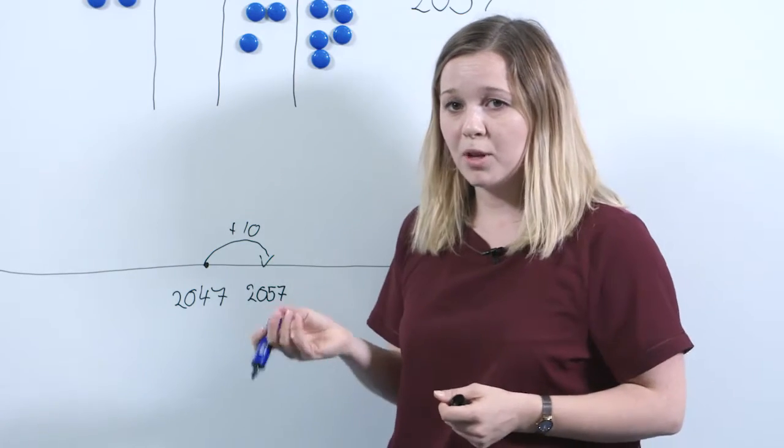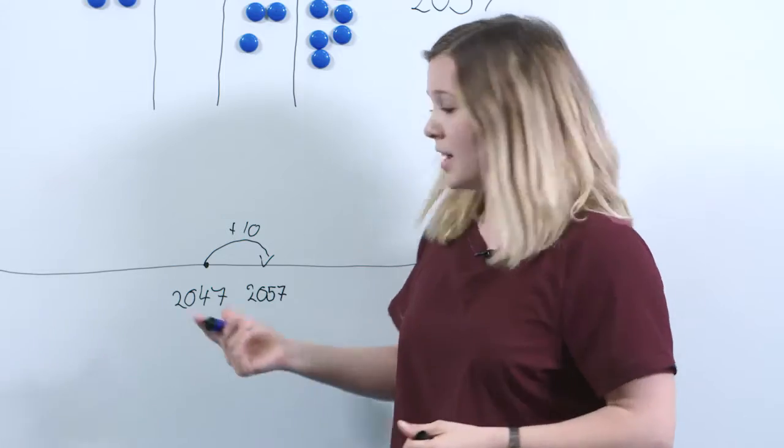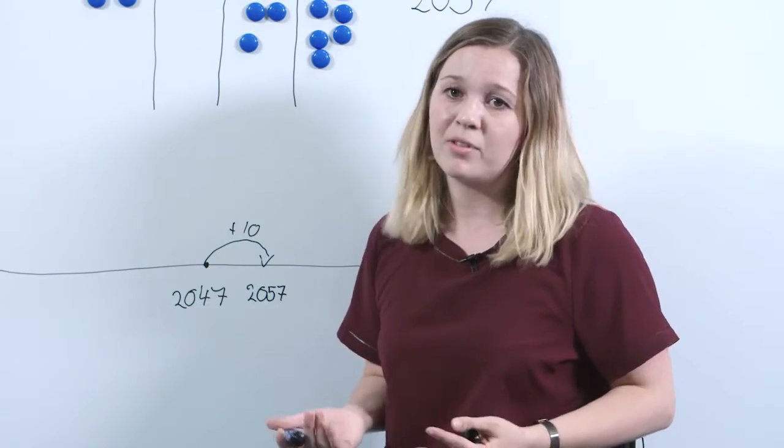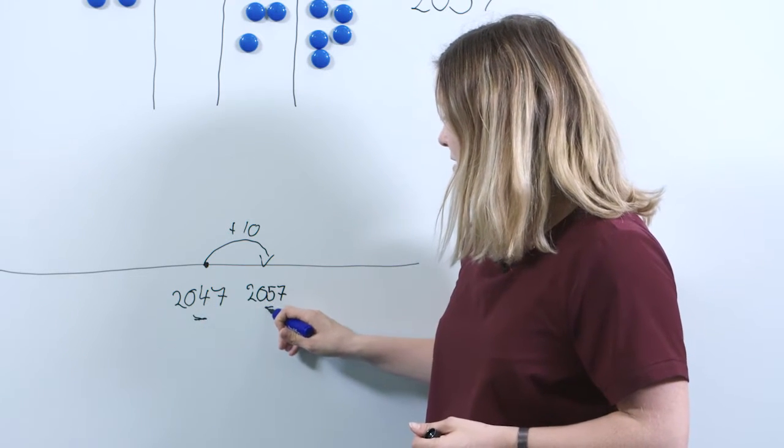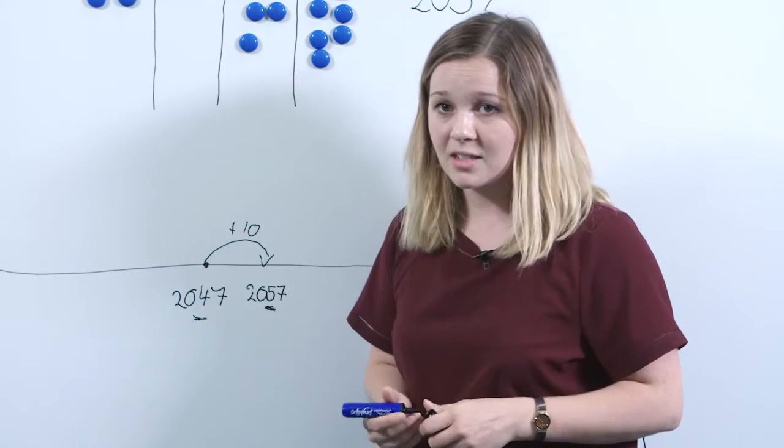A good way to help pupils start to spot patterns is to ask them to look at these numbers and say what has happened to the number. So hopefully they'll see that it's this digit in the tens place which has changed when we've added 10.